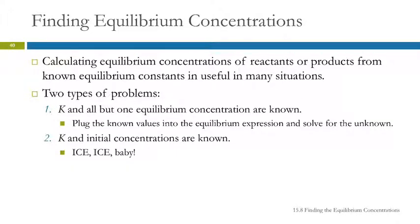How do we find equilibrium concentrations? We've looked at a couple different approaches: we can calculate the equilibrium constant by measuring the equilibrium concentrations, or we can calculate the equilibrium constant if we know the initial concentrations and one of the equilibrium concentrations. But what if something is difficult to measure, yet we know what the equilibrium constant is? Then we can find equilibrium concentrations without having to measure them.